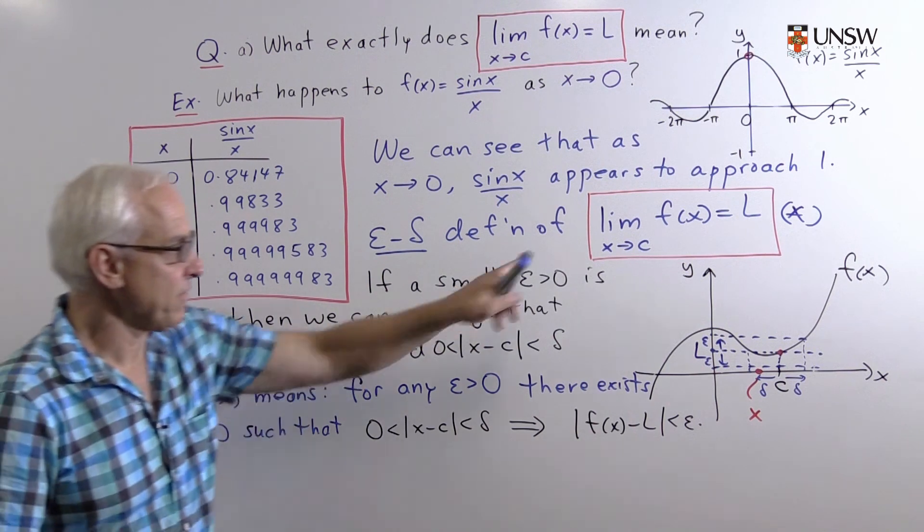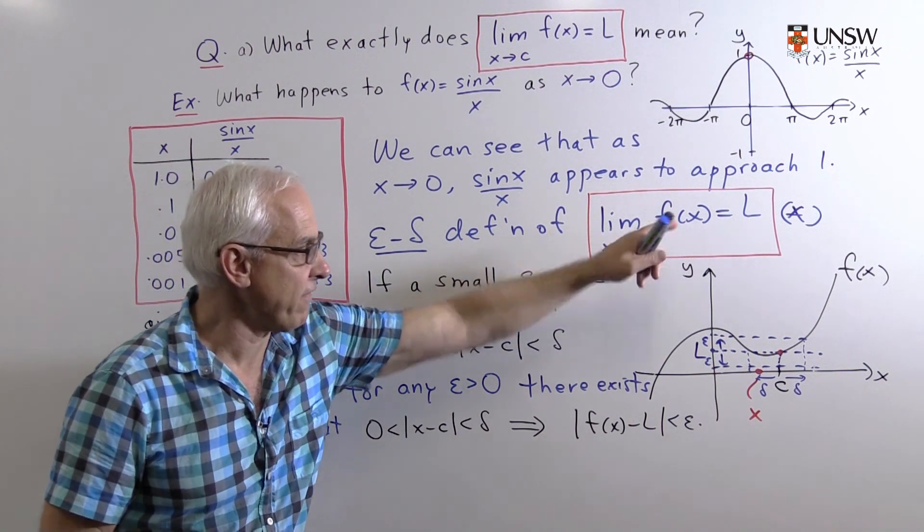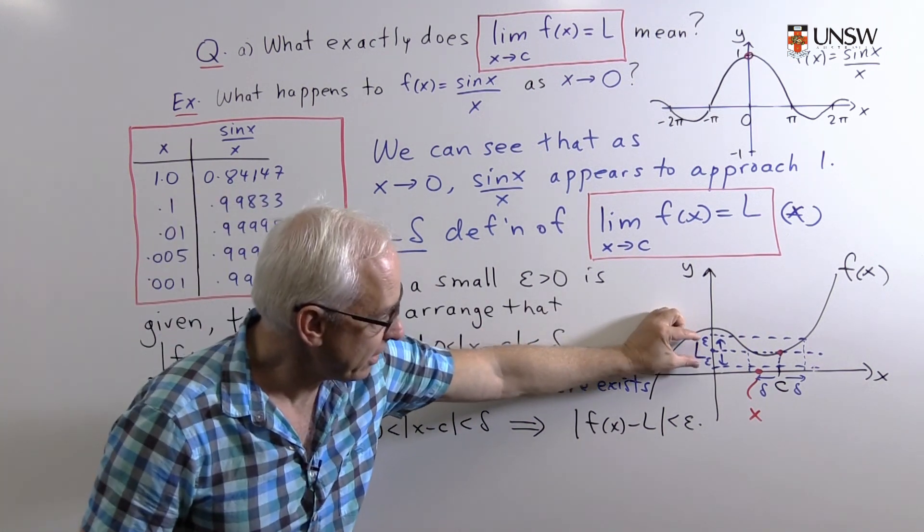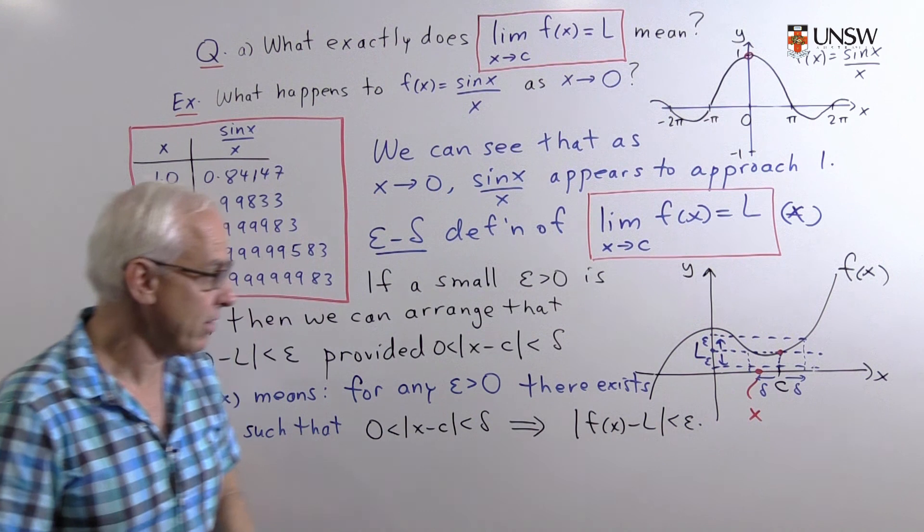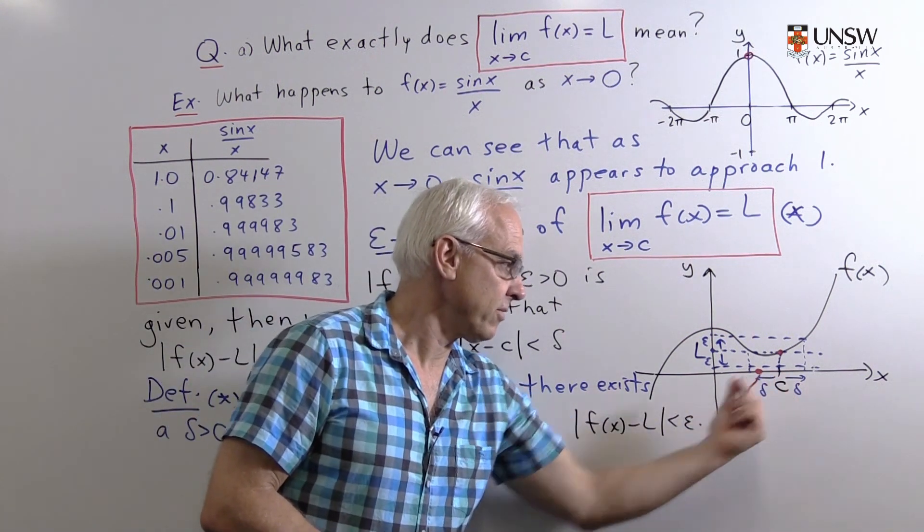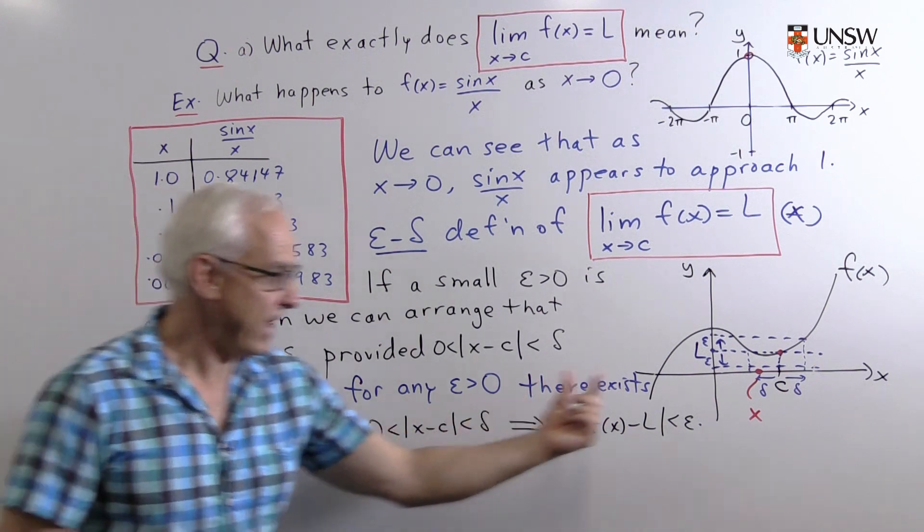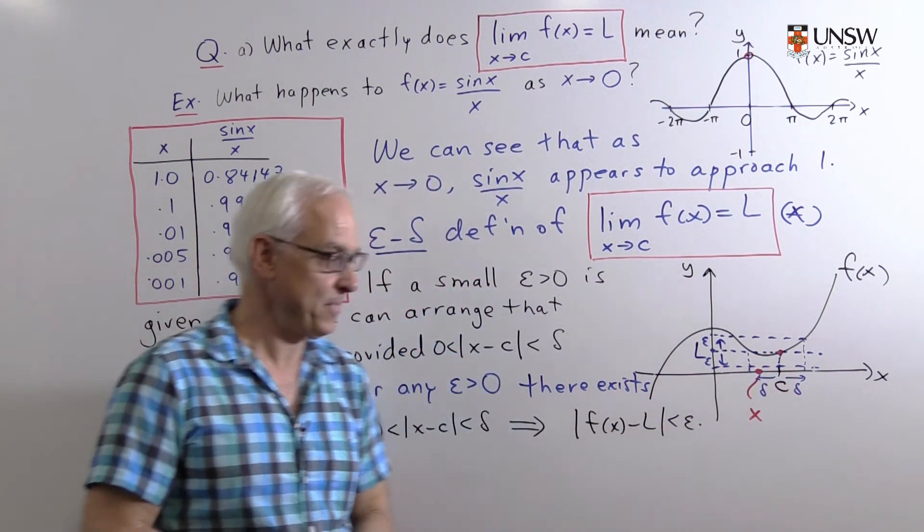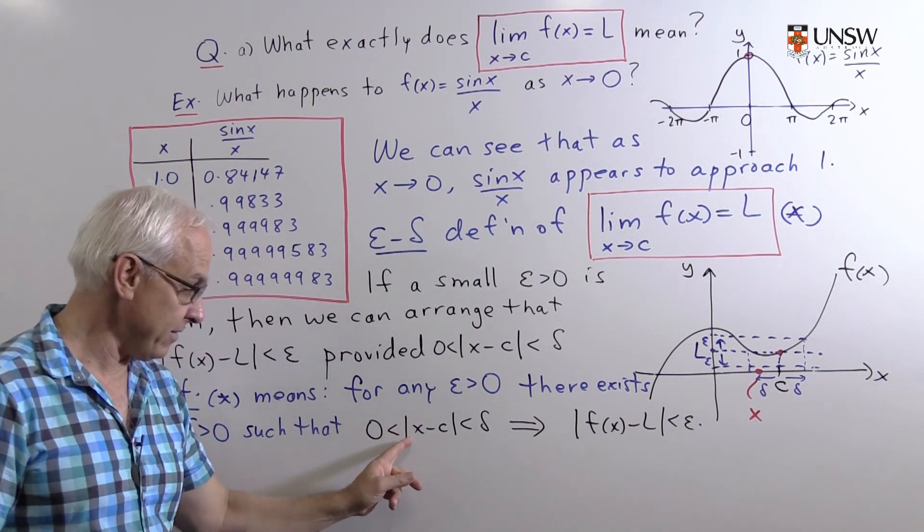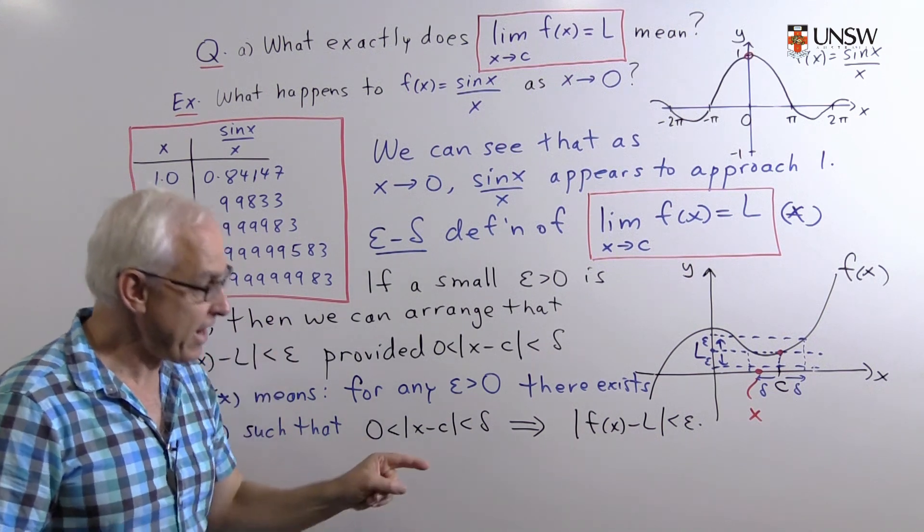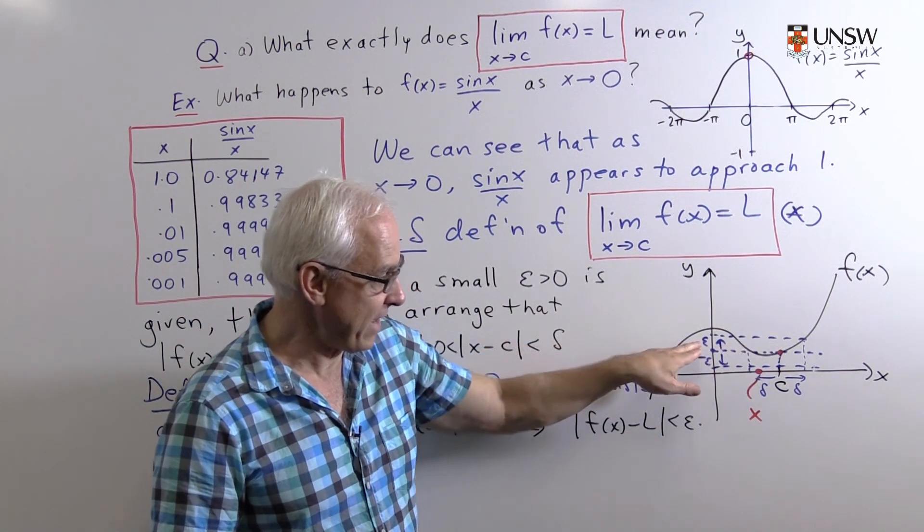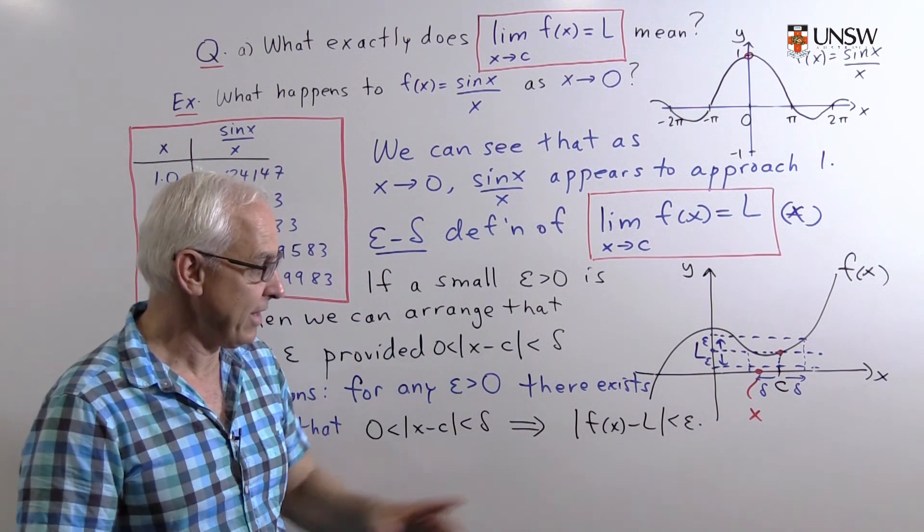That's what it means for the limit as x approaches c of f(x) to equal L. It means that for any epsilon that's given, no matter how small, we can find a delta greater than zero so that if x is within delta of c but not actually equal to c, so bigger than 0 and less than delta, then |f(x) minus L|, the difference between the function's value and this limiting value L, is less than epsilon.